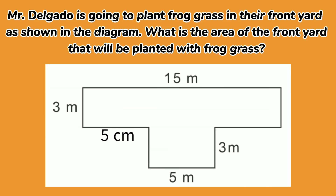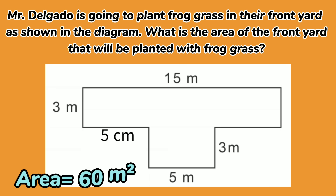Let's have another problem. Mr. Delgado is going to plant frog grass in their front yard. What is the area of the front yard that will be planted with frog grass? The area of the front yard is 60 square meters.